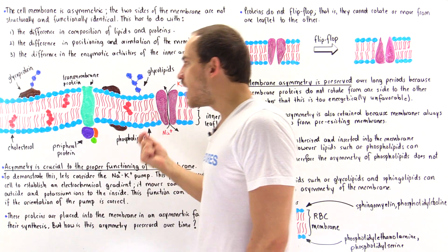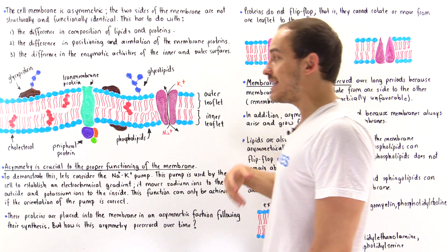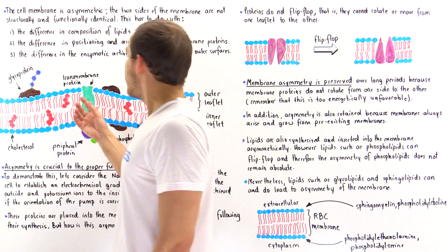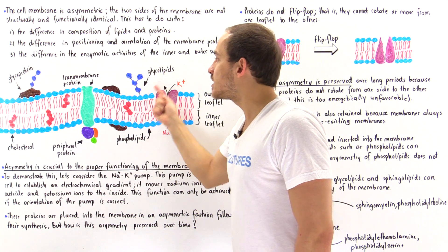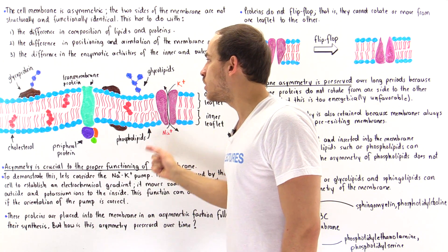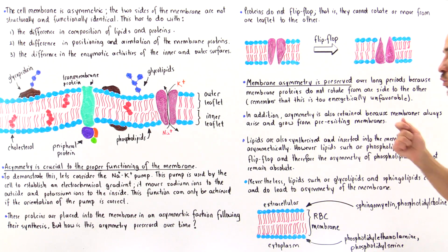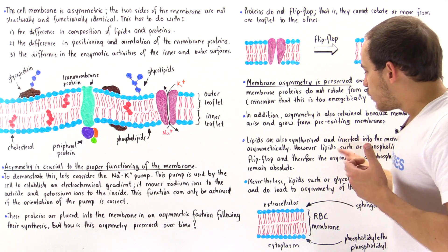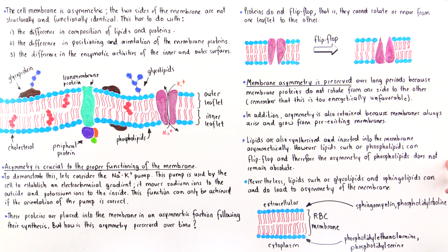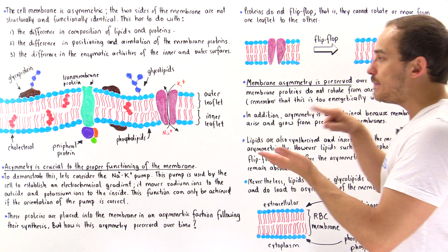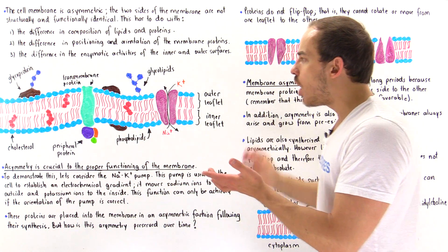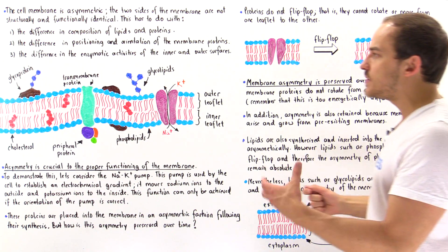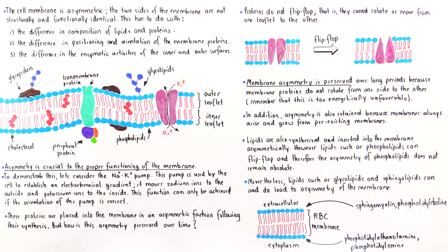However, flip-flopping of phospholipids actually takes place very, very slowly because it is also energetically unfavorable. In fact, certain lipids such as glycolipids — which contain very large polar components — cannot actually rotate, because those polar interactions would be destabilized when they interact with the hydrophobic core region. So just like proteins, glycolipids cannot actually flip-flop or rotate. Because the flip-flopping process takes place so slowly, and because certain lipids like glycolipids cannot rotate, lipids also — just like proteins — contribute to the asymmetric nature of membranes.